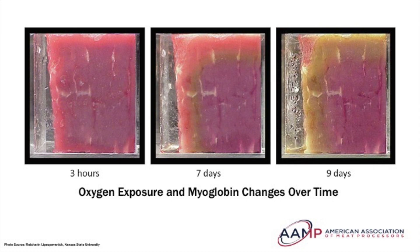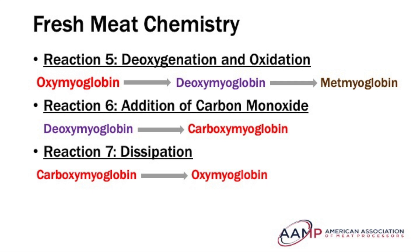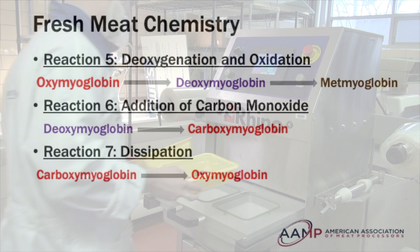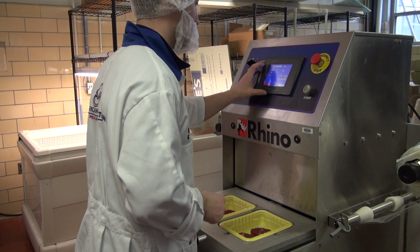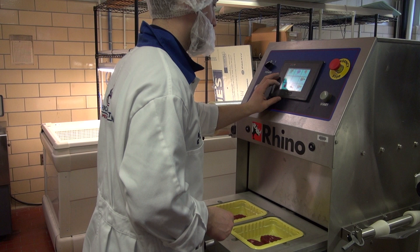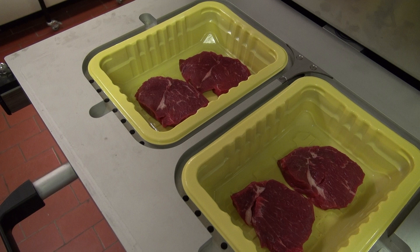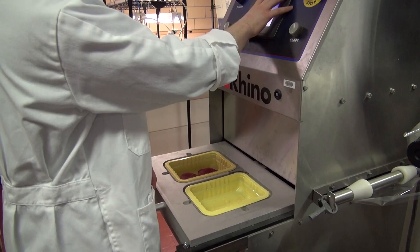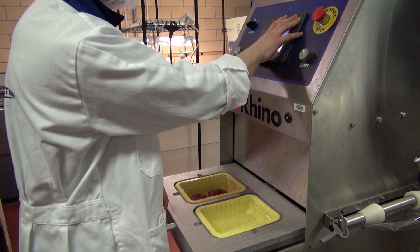Reaction number six is called the addition of carbon monoxide, where deoxymyoglobin is converted to carboxymyoglobin. In modified atmosphere packaging, carbon monoxide is used to bind to the vacant sixth ligand position of deoxymyoglobin. Myoglobin naturally has a greater attraction to carbon monoxide than to oxygen, resulting in a stable bright cherry red color of carboxymyoglobin that gives the product a longer color shelf life. However, using carbon monoxide in modified atmosphere packaging can present a problem in that the color can be so strong that it lasts longer than the microbial shelf life of the product and can mask spoilage.